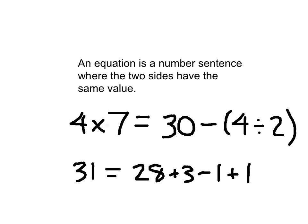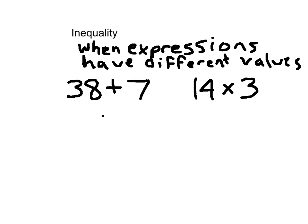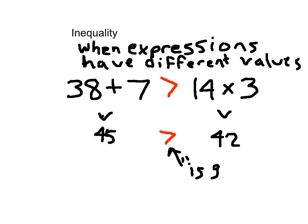We'd have what we call an inequality. And that's what we're going to go on to next. We'll have what is called an inequality when the expressions have a different value. So with these two expressions: 38 plus 7 is actually just 45, and 14 times 3 is equal to 42. For an inequality, we're going to use some new symbols — or some symbols that should be familiar to you. We know that 45 is bigger or greater than 42. So we put that right in between those two expressions, and we read it: 38 plus 7 is greater than 14 times 3. This symbol is read: is greater than.